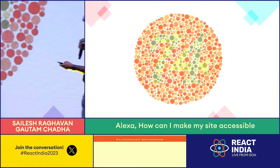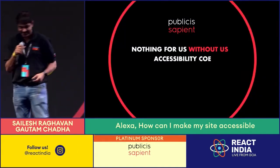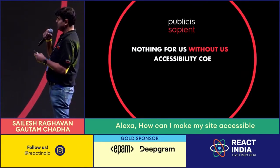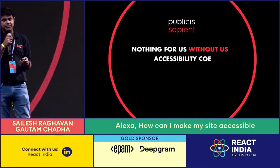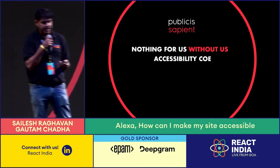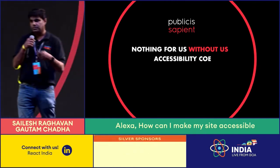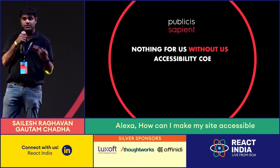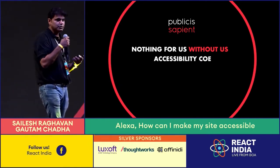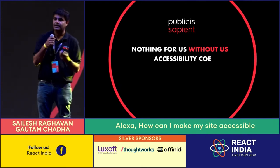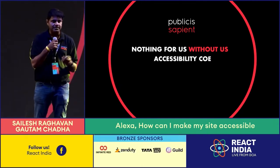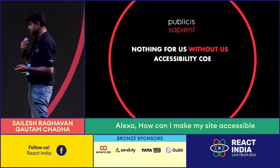So what do we do at Sapient differently? We believe in the concept of 'nothing for us without us,' which is the premise of how we built our accessibility Centre of Excellence. We have people with physical, visual, and hearing impairments who test applications for us, so we realistically know what the end user is experiencing. That allows us to get everyone on board and make the experience whole and sound for everyone.